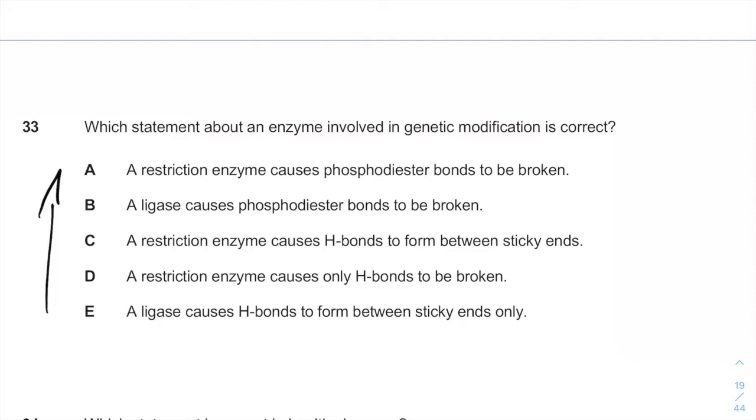So which statement about the enzyme involving genetic modification is correct? A restriction enzyme cause only H-bonds to be broken? No. It's actually, as you see from the right answer, it causes phosphodiester bonds to be broken at a specific region of the DNA.